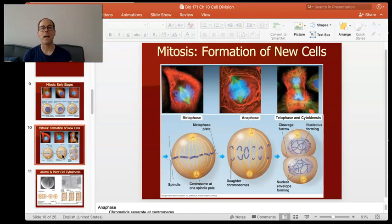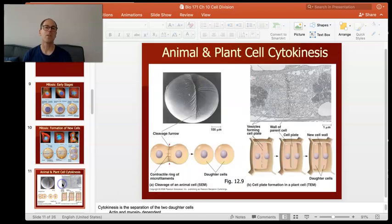Now, the last part of this is we have to form two new cells. Now, that process is called cytokinesis. So in cytokinesis, we're actually going to form two new cells. It's a little bit different depending on whether you have an animal cell or a plant cell. What happens in an animal cell is this. So this is actually an electron microscope image of a cell undergoing cytokinesis.